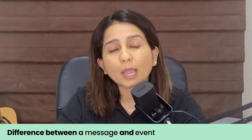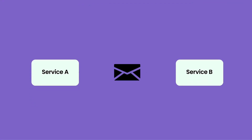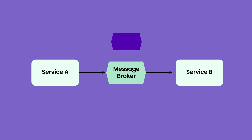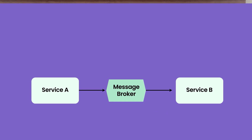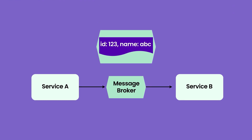Let's recap the difference between a message and an event. When two microservices have to communicate with each other, they communicate using a message broker. A message broker allows packets of data to transfer from one service to another. That particular piece of data transferred over a message broker is called the message. The message is the medium of communication or the transfer of data, whereas the event itself is the payload that is sent over that message.